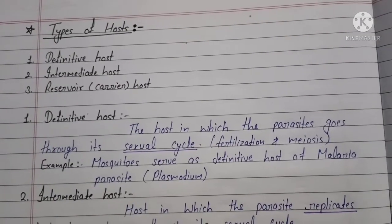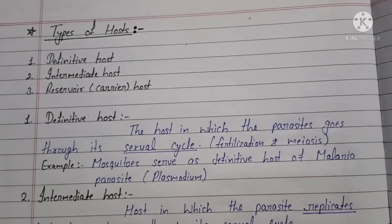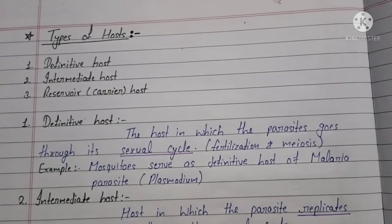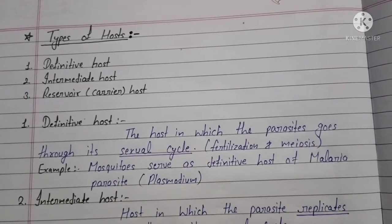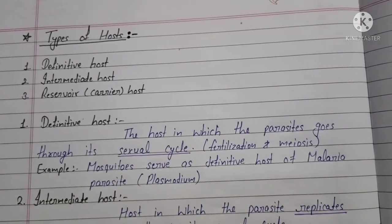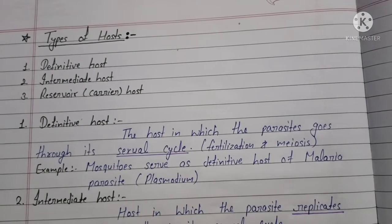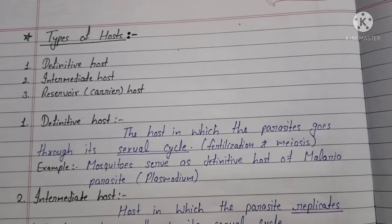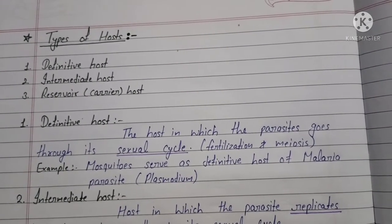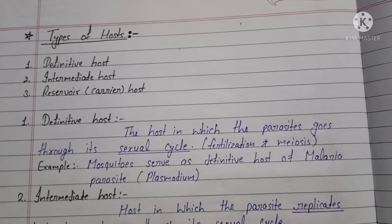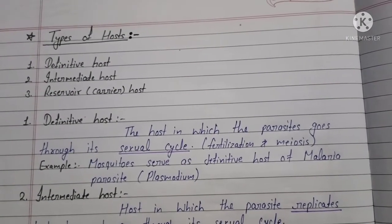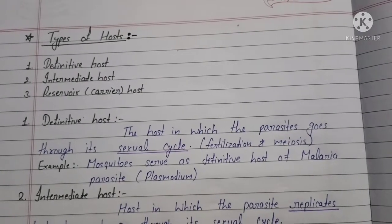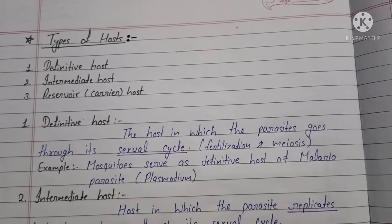Now we will discuss the types of host. There are three types of host. First, definitive host. Second, intermediate host. Third, reservoir host. The definitive host is one in which the parasite goes through its sexual cycle, such as fertilization and meiosis. For example, mosquitoes serve as the definitive host of the malaria parasite.